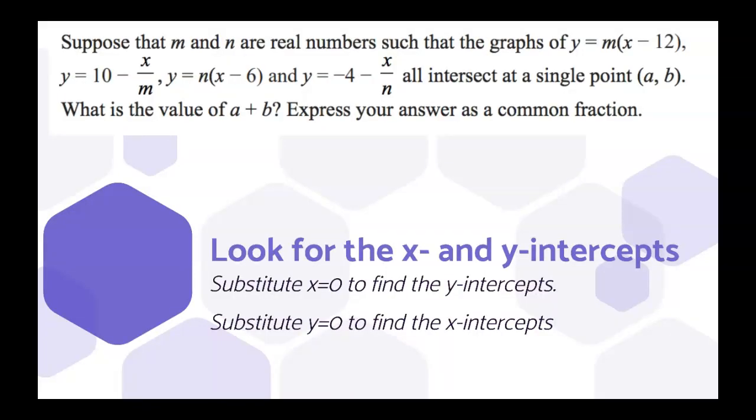And second, we can look for the x and y intercepts. To find the y intercept, substitute x equals 0, and to find the x intercept, substitute y equals 0. So in the first equation, we get (12, 0). The second one goes through (0, 10). The third through (6, 0). And the last through (0, negative 4).